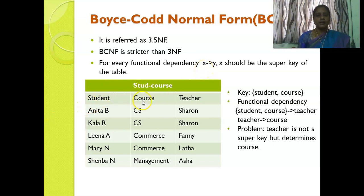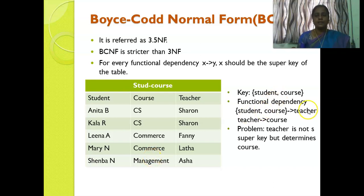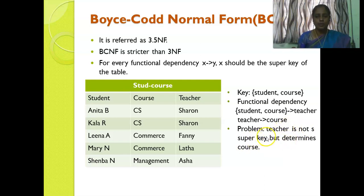In this table with student name, course, and teacher, the keys are student and course. The functional dependencies are: student and course together determine teacher, and teacher determines course. This is not in BCNF because teacher is a non-prime attribute and it is determining course — teacher is not a super key, but it is determining course. This is the problem, so we have to eliminate this.